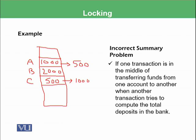As we discussed, this transaction takes multiple steps. In the first step, the 1000 will be read and put into the register associated with the CPU. Then this value has been decremented by 500 and stored back as 500. But the 500 which has been decremented from account A has not yet been put into account C. And at that time, if one transaction tries to identify the summary of the total amount held in the bank accounts, that would be wrong.